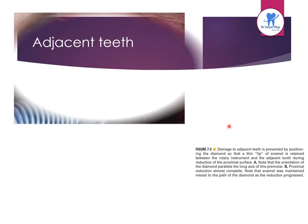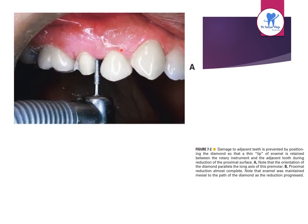Iatrogenic damage to an adjacent tooth is a common error in dentistry. Damage to adjacent teeth is prevented by positioning the diamond so that a thin lip or fin of enamel is retained between the rotary instrument and the adjacent tooth during reduction of the proximal surface.